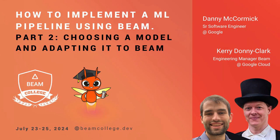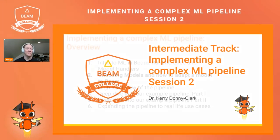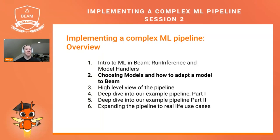Welcome back to the Apache Beam College Intermediate Track, Implementing a Complex ML Pipeline. This is session two. Last time in session one, we had an introduction to Beam and the RunInference transform and the ModelHandler class that provides the main argument to the RunInference transform. Today in session two, we're going to talk about how to choose a model for a task and how to adapt that model to Beam.